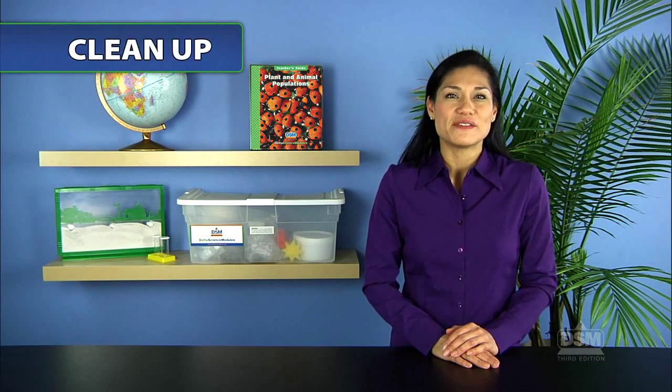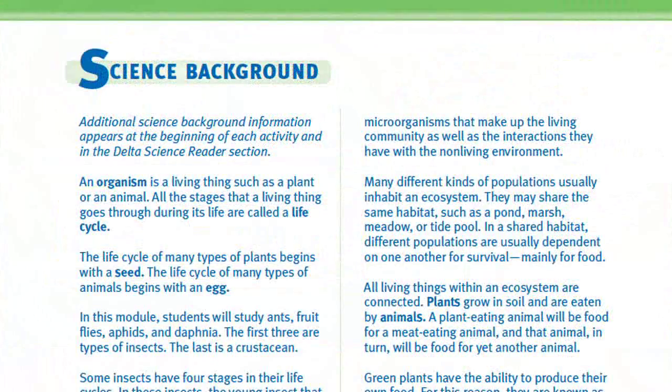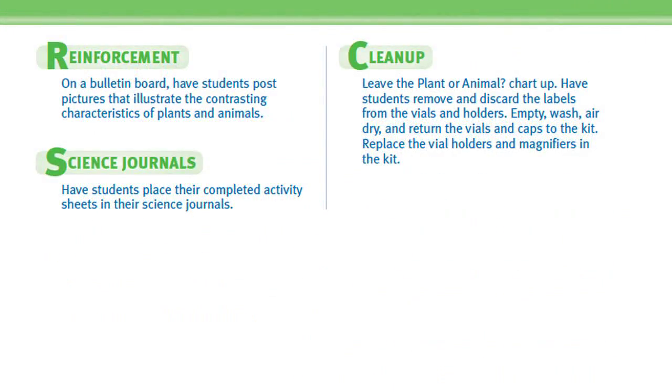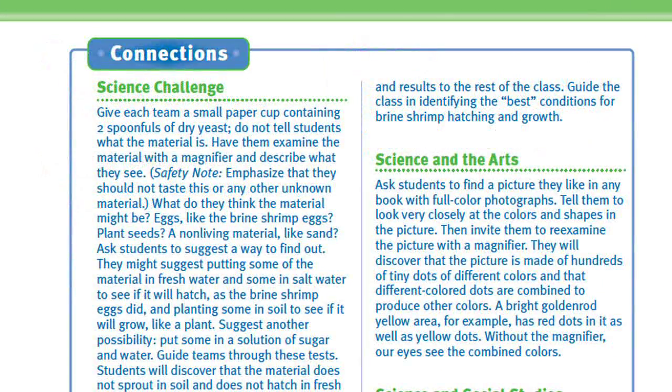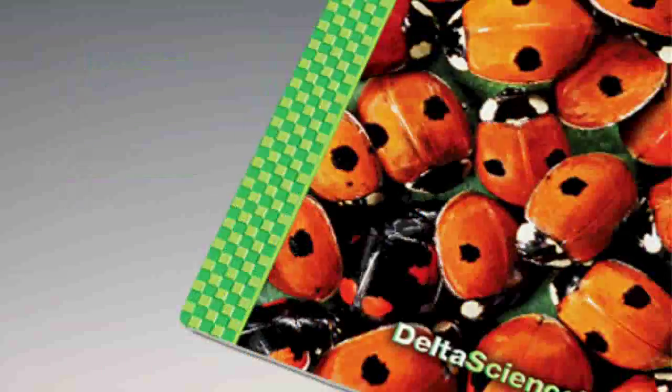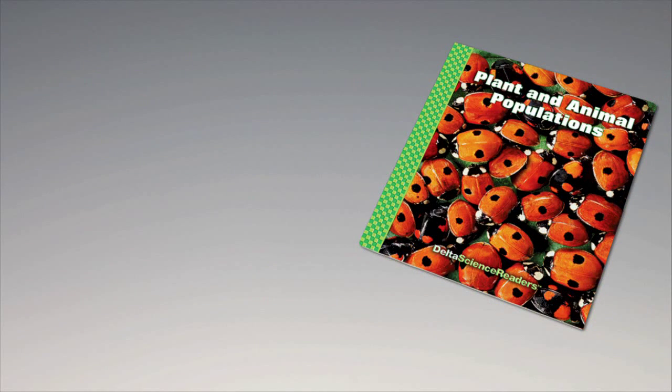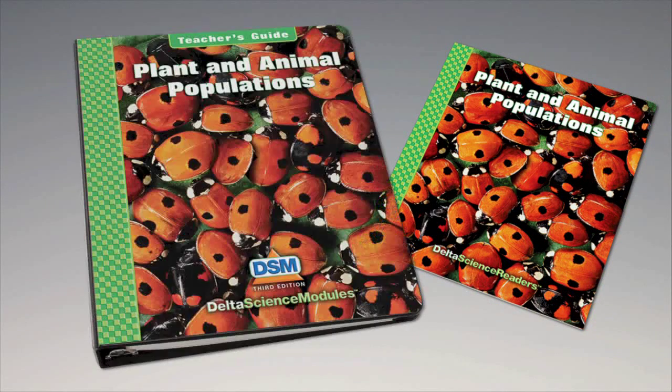To conclude the activity, collect the magnifiers and unused yarn and return them to the kit. Leave the How Many Organisms chart posted in the classroom. For science background, reinforcement activities, curriculum connections, and information about the Delta Science Reader, please consult your DSM teacher's guide.